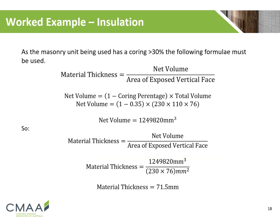As our masonry unit has voids greater than 30%, we must use the following material thickness formula: material thickness equals net volume divided by the area of the exposed vertical face. Net volume is equal to the total volume of the unit times (1 minus the coring percentage). The area of the exposed vertical face is simply the area of the brick face: 230mm × 76mm. Subbing these numbers into the material thickness formula, we determine the material thickness to be 71.5mm.